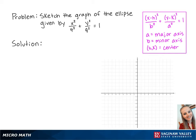For the given problem, a is equal to 9 and will be vertical since it is underneath the y. b is equal to 4 and will be horizontal since it is under the x.